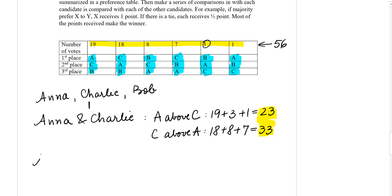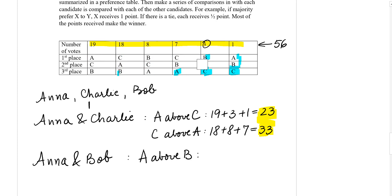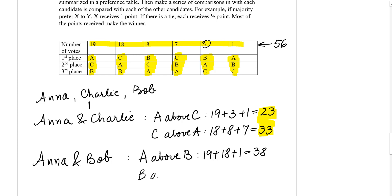Now let's compare Anna and Bob. Looking at the table for where Anna is above Bob: in the first column Anna is above Bob, giving 19 points; in the second column Anna is above Bob, giving 18 points. In the remaining columns Anna is not above Bob, except for one column that gives 1 point. So Anna's total is 38 points.